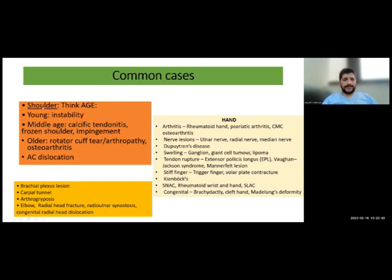For the shoulder, there are a few varieties for instability, like anterior instability and recurrent shoulder dislocation. These cases are usually seen in young age. For middle age, you can face cases like frozen shoulder, impingement, or calcific tendinitis. In older people, you can see rotator cuff tear and rotator cuff arthropathy — rotator cuff arthropathy is much more common than rotator cuff tear — and glenohumeral osteoarthritis. Also, AC dislocation (acromioclavicular dislocation) can appear in the exam, either as an acute case or delayed presentation.